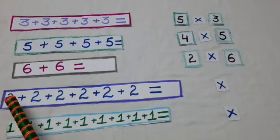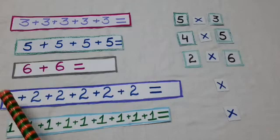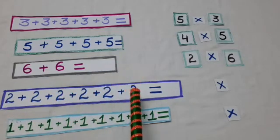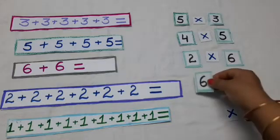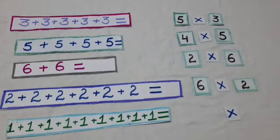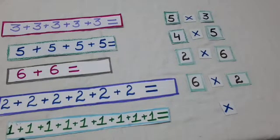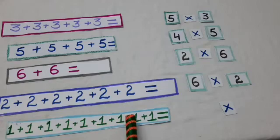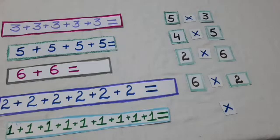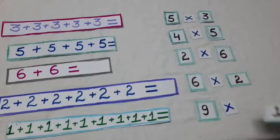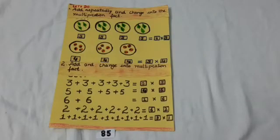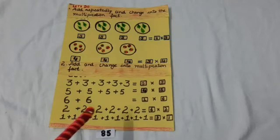In this question also, let's count. 2 is coming how many times? 1, 2, 3, 4, 5, 6 — 6 times 2 is coming here. So, how can we write it into the multiplication form? 6 multiply 2. And 1 is coming 9 times, so we can write it as 9 multiply 1. Students, solve the questions given on page number 85 of your mathematics books in the same way.